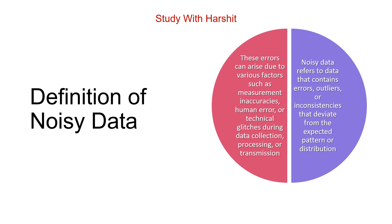Noisy data किस वजह से होता है? यह जो error होती है, arise होती है — किस factors की वजह से? या तो measurement में inaccuracy हो, human error हो, या technical glitch हो during data collection की time, data processing की time, या data transmission की time.